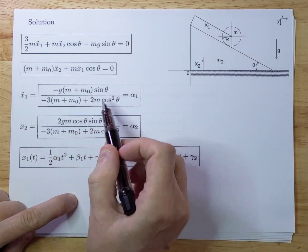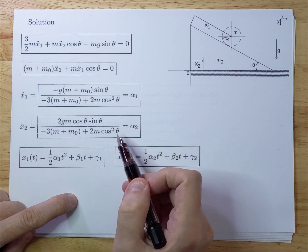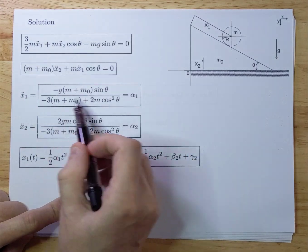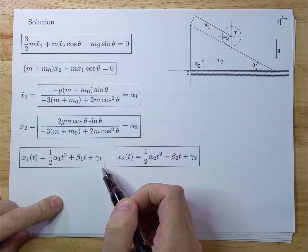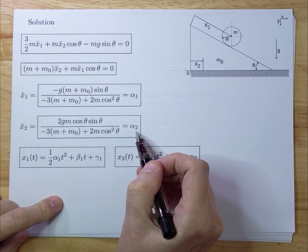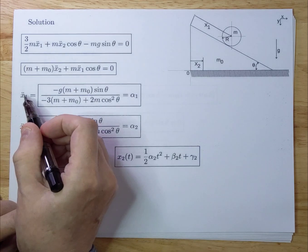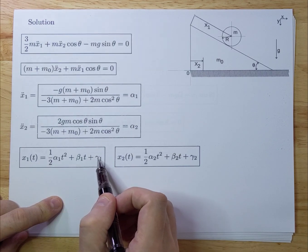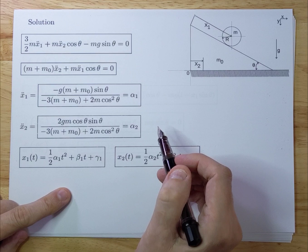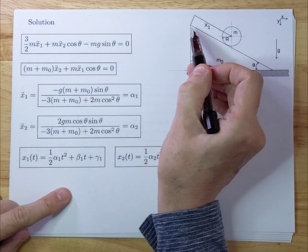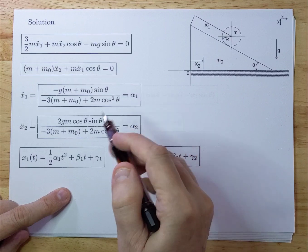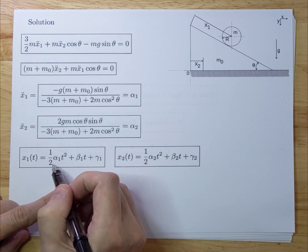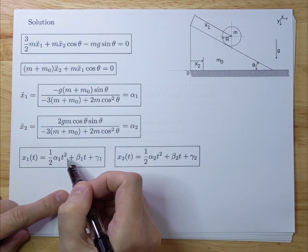Since there are no other active components, you expect constant acceleration. We can integrate twice — calling the accelerations alpha1 and alpha2 to keep the formulas manageable — to get the generic solution for how position varies over time. If we assume an initial location of zero and initial speed of zero, then beta1, gamma1, beta2, and gamma2 are all zero, and you simply get half alpha1 t squared, which is exactly what you expect.